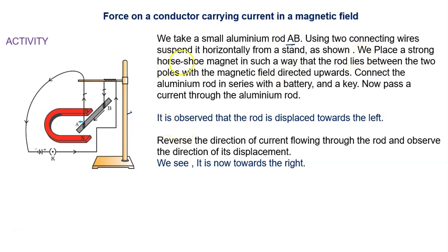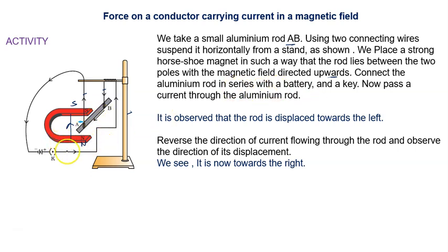We place a strong horseshoe magnet such that the rod lies between the two poles, with the magnetic field directed upward. This is the north side and this is the south side. The magnetic field goes from north to south, and the aluminum rod is placed horizontally.